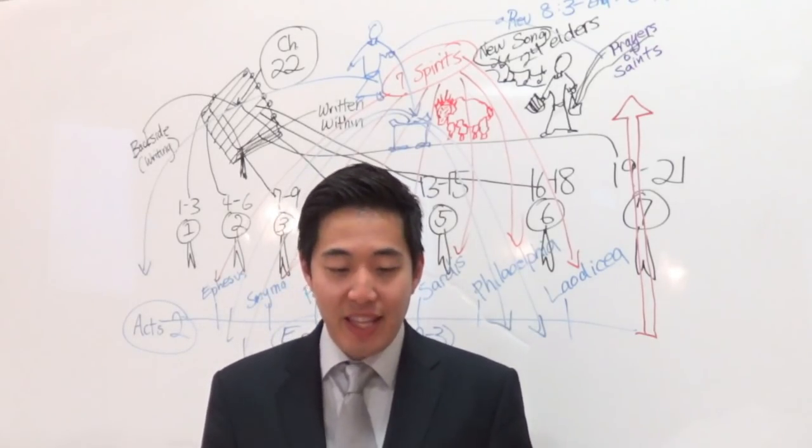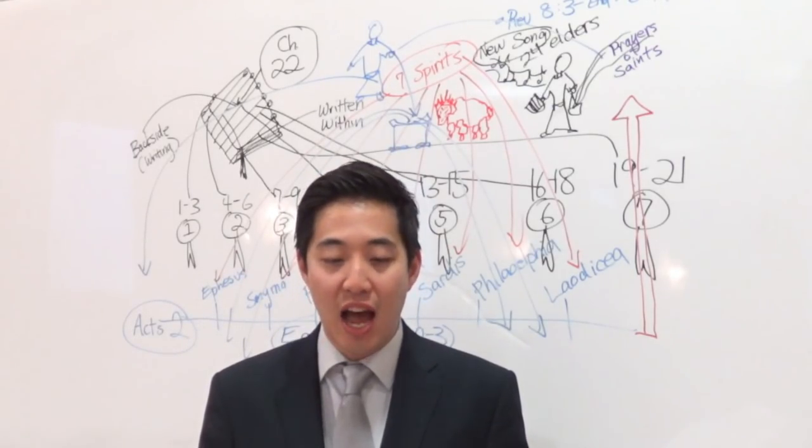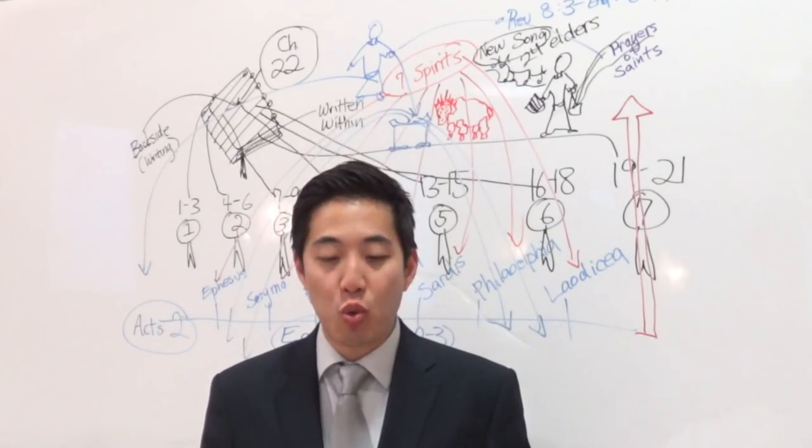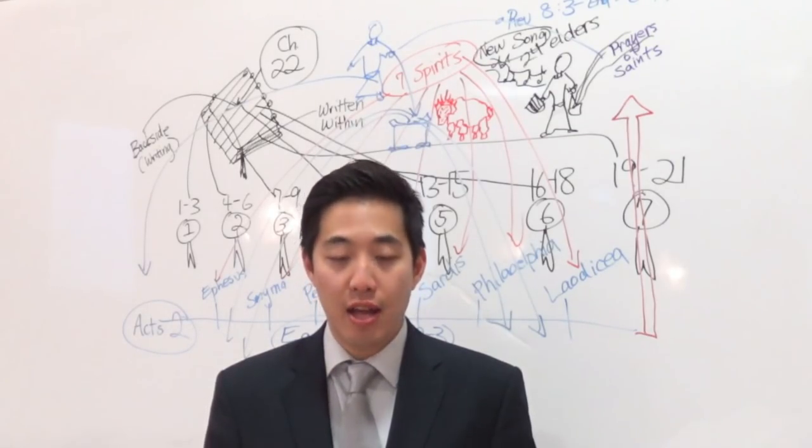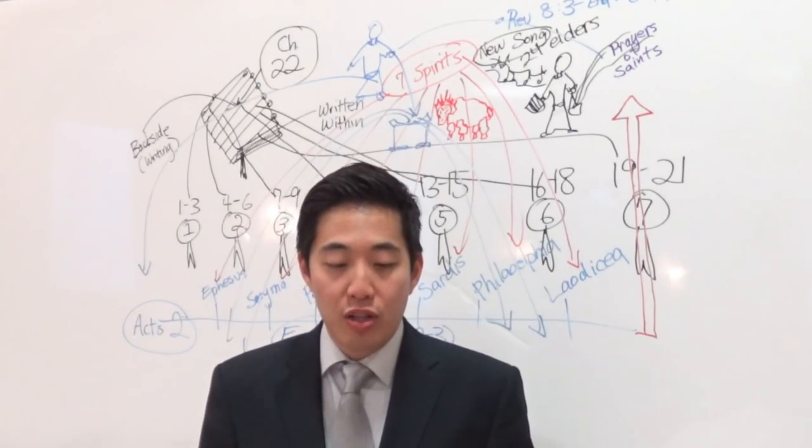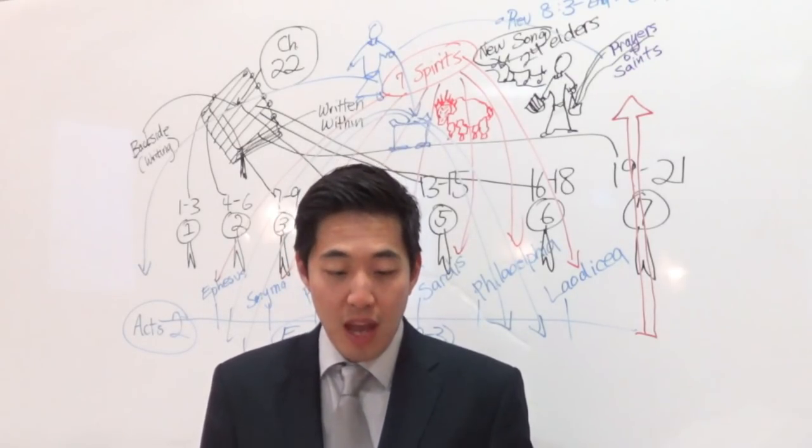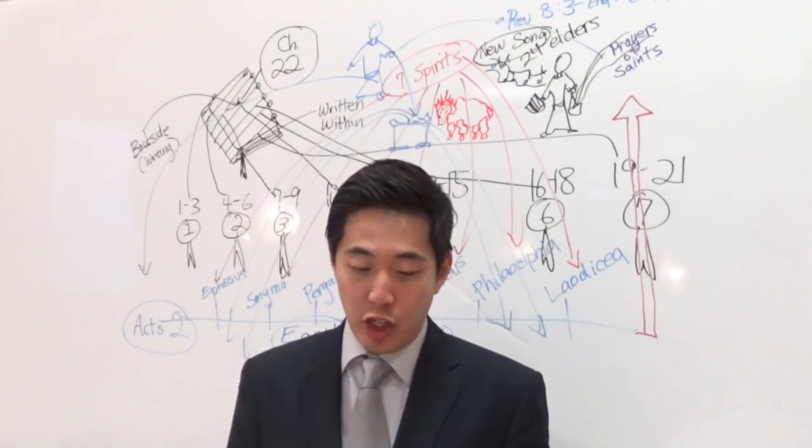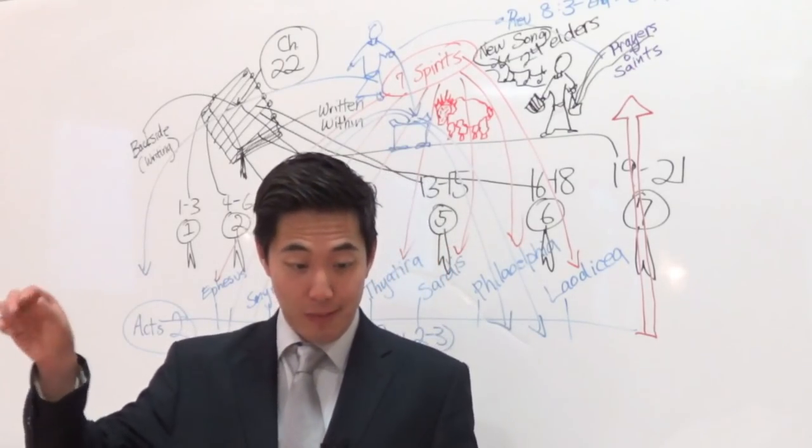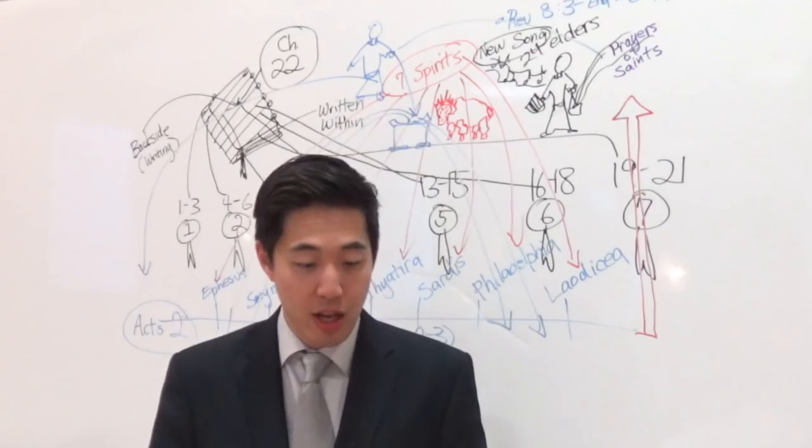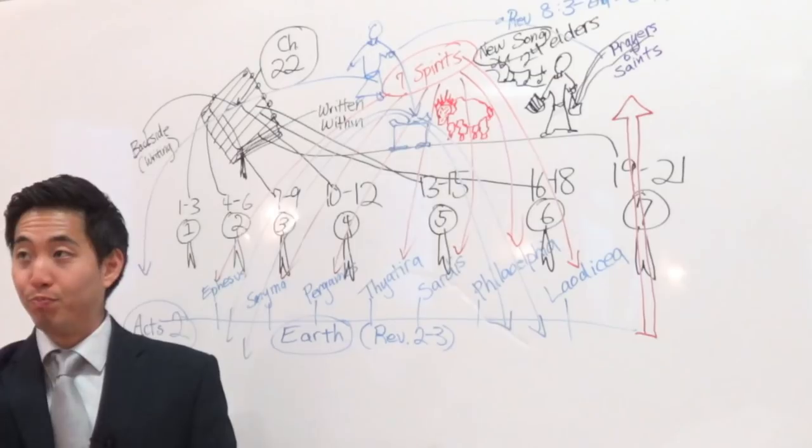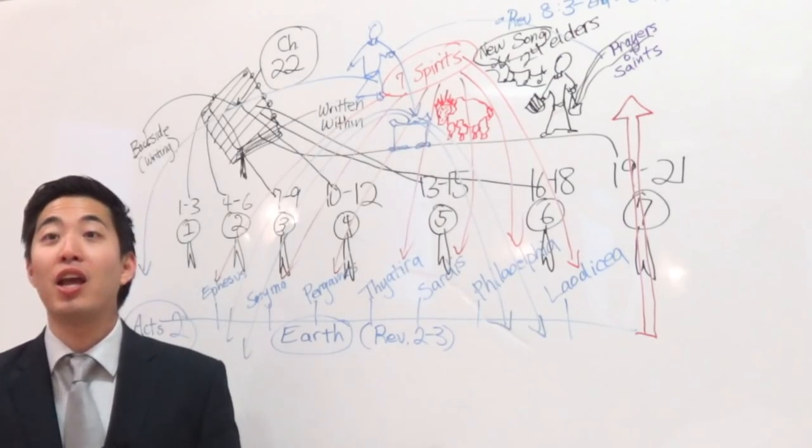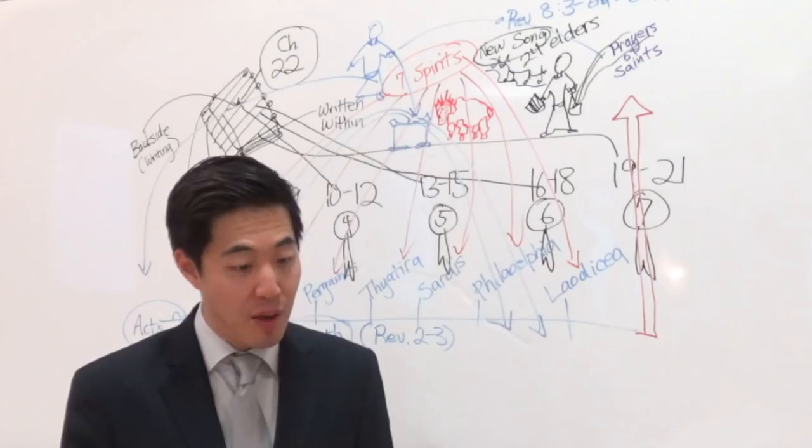Now notice that these 24 elders at verse 9 who's singing it, it's not just 24 in number. Notice the last part of verse 9 reads, out of every kindred and tongue and people and nation. So these are people all over the world. And hast made us unto our God kings and priests. You're a king and a priest, and we shall reign on the earth.